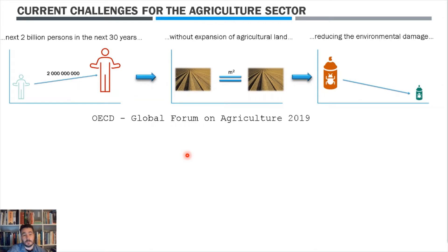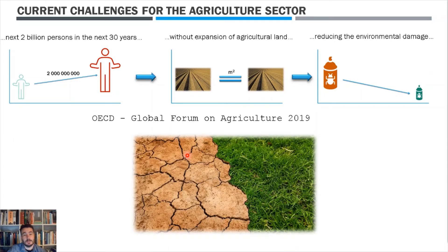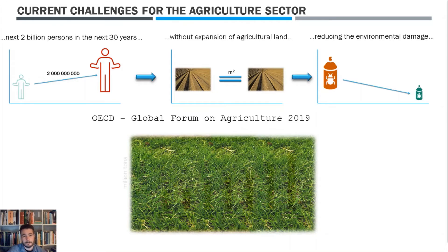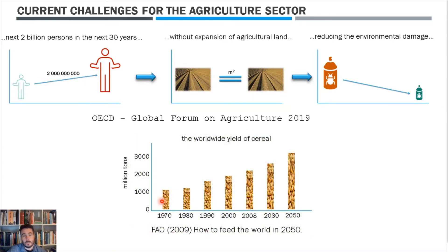The main challenge is adapting the whole agriculture sector to global climate change. For example, the yield of cereal, which is one of the most important crops worldwide, must increase by almost a billion tons by 2050 from the current level, to feed the increasing population. This was already pointed out in the FAO report in 2009.